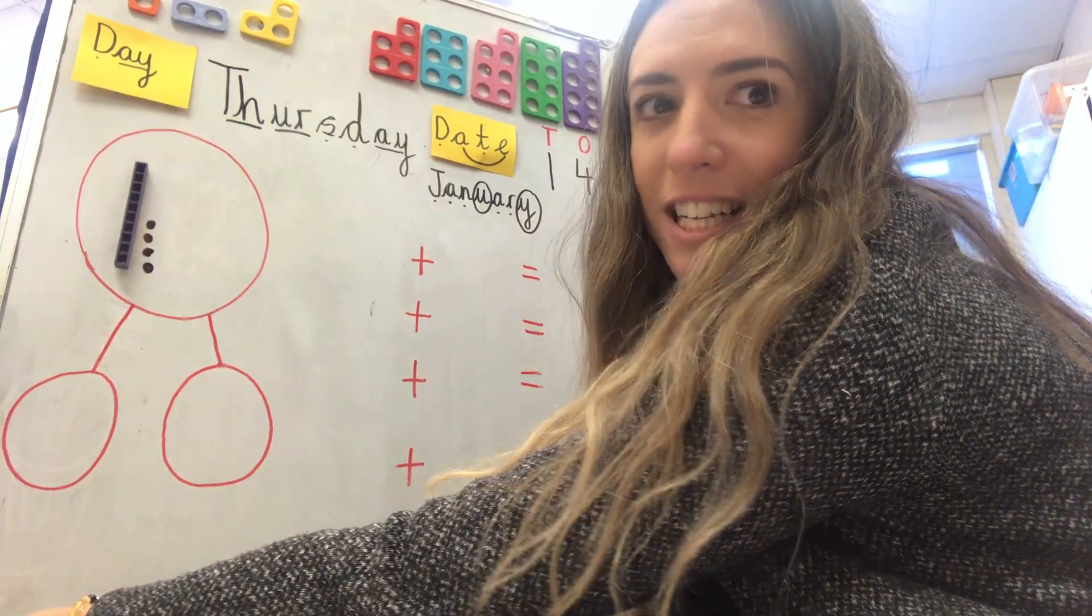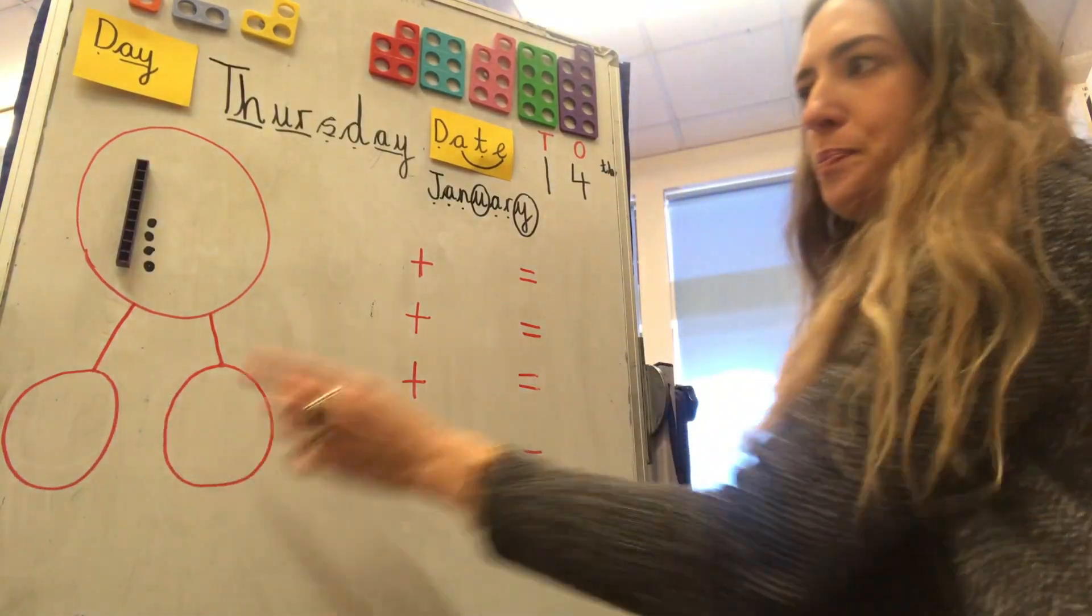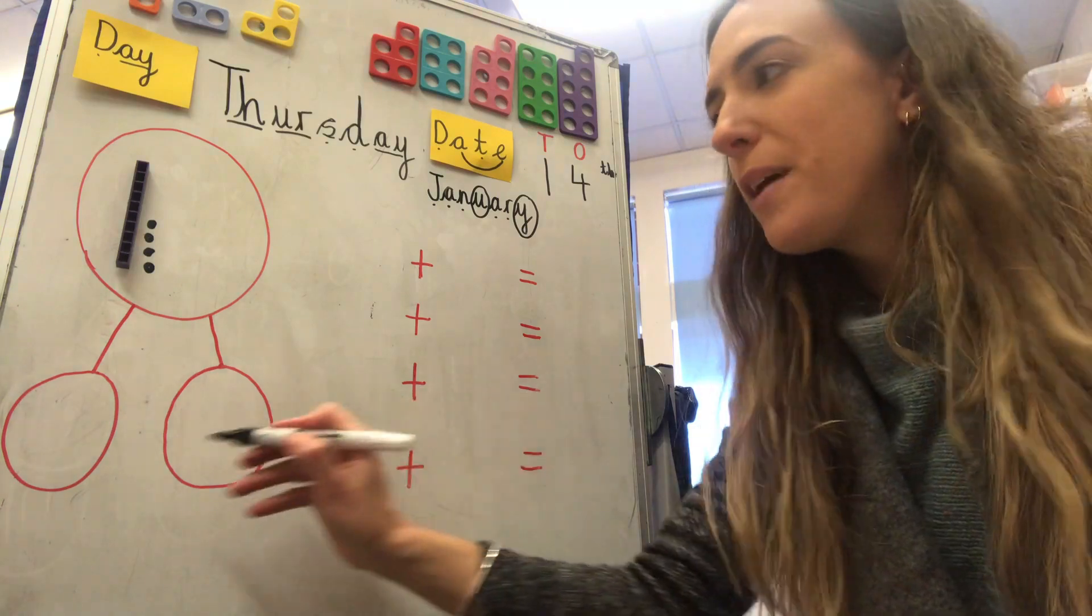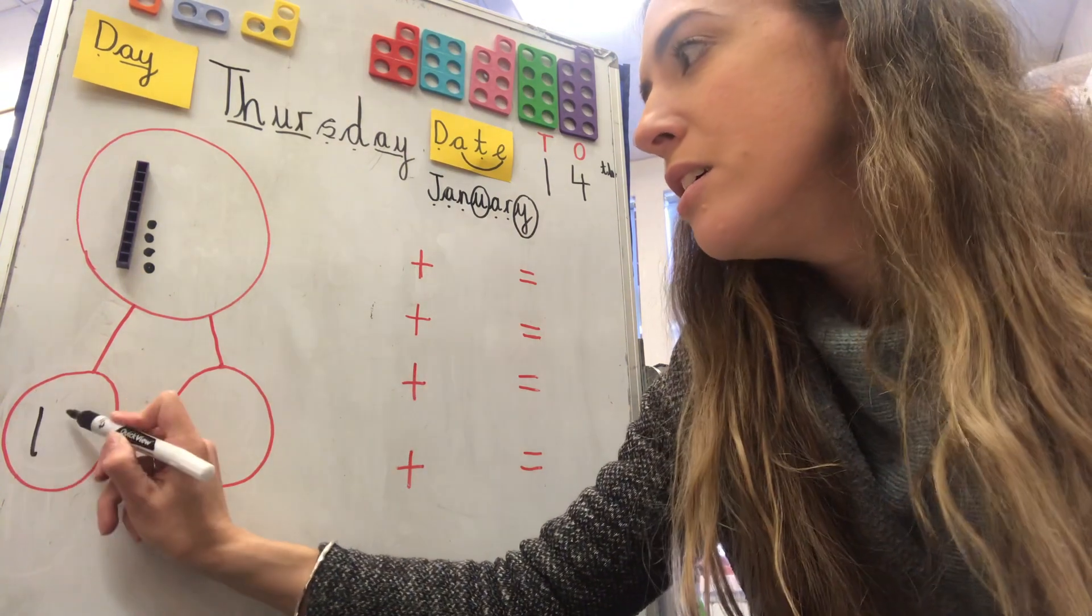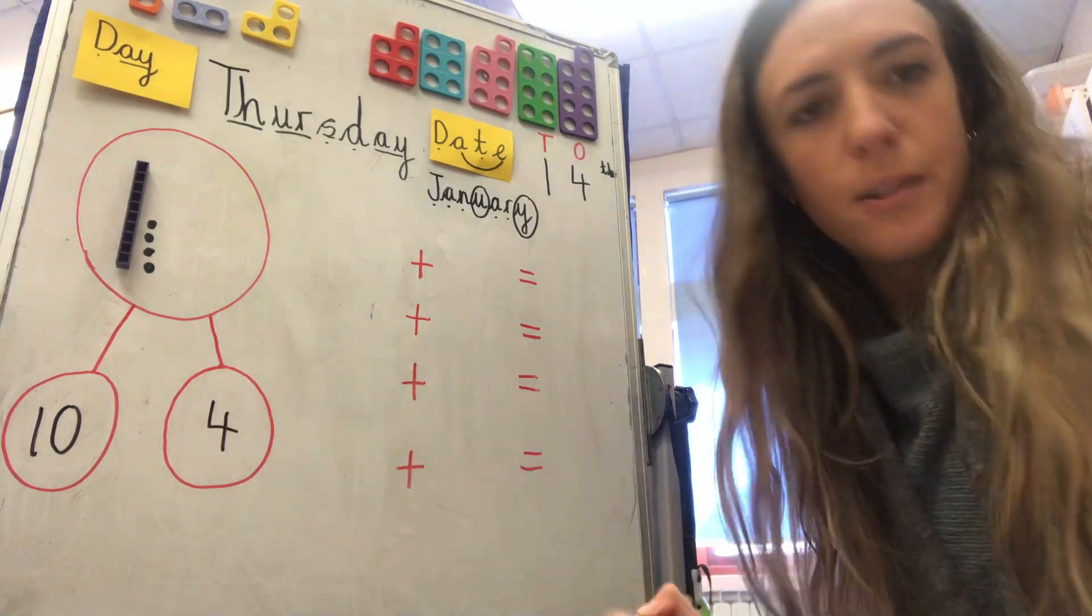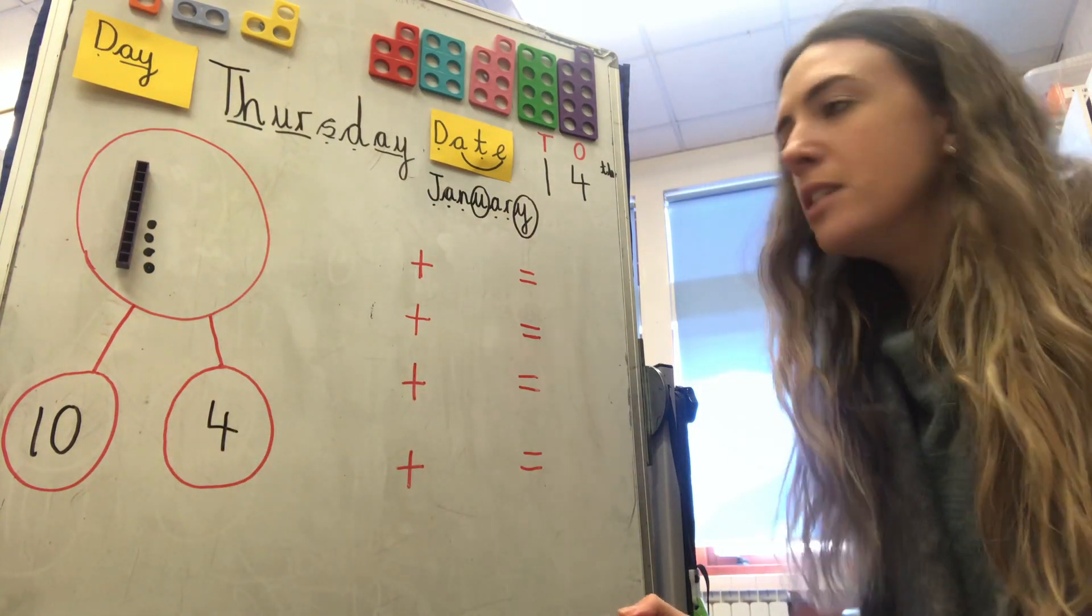Okay, right, let's break it into two parts. I'm going to break it into two parts. And my easy way to do it is with one ten, ten here, and four ones. I'm going to do it like that first. Okay, super.